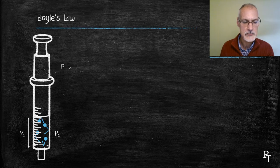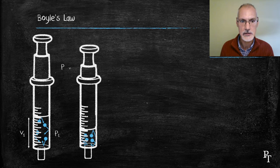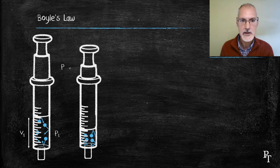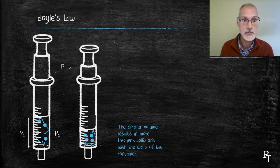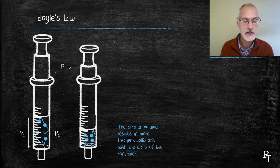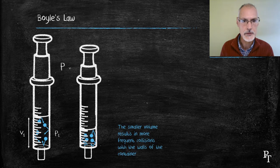Well, if I push down on my plunger, making the gas occupy a smaller volume, what will happen is the particles will have less distance to travel and as a result will strike the sides of the container more often, resulting in an increase in pressure. So as the volume went down, the pressure went up. This is what we call an inverse relationship.